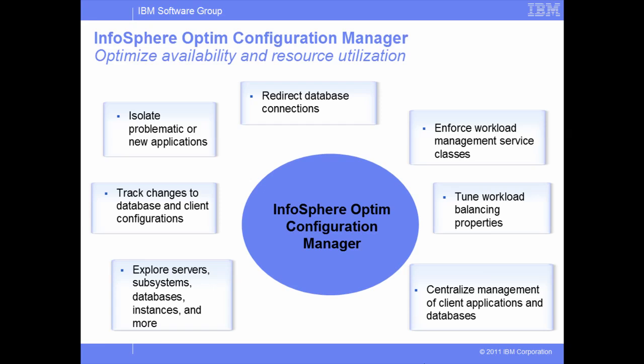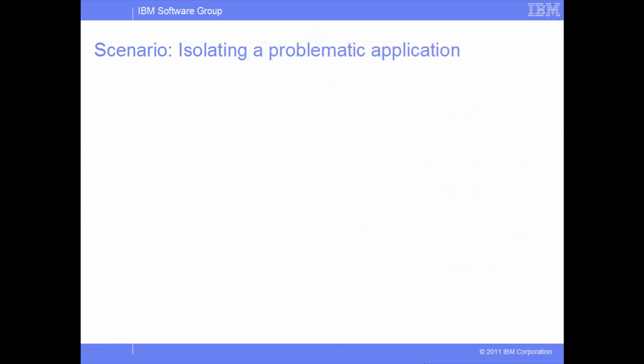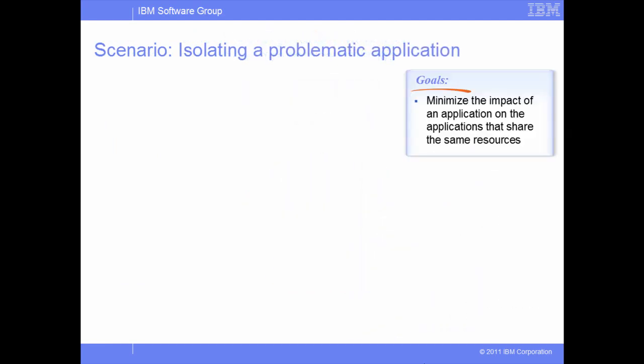Provide DBAs with a central web-based graphical user interface and repository to effectively manage client applications and databases. Let's see how Infosphere Optim Configuration Manager helps the IT team overcome some availability and resource utilization challenges. In the first scenario, the Sample Outdoor Company has several production applications running on the DB2 for ZOS subsystem. The IT team wants to create a separate environment in which a potentially problematic application can be quickly isolated for analysis and to prevent it from impacting other applications that share the same resources.